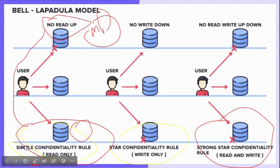To stop this, the Simple Confidentiality Rule is applied. Now let's look at the Star Property Rule. In this rule, there is no write down.